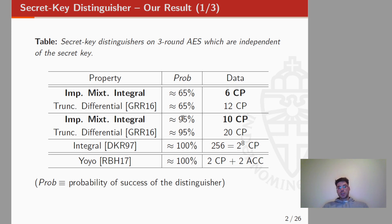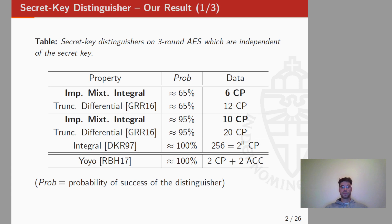There are other distinguishers in the literature. In particular, we have the integral one, the zero-sum, which requires 2^8 chosen plaintexts. And finally, we have the YOYO distinguisher, which requires a total of 4 chosen plaintexts and 2 adaptive chosen ciphertexts. In these two last cases, the probability of success is very high, approximately 100%.